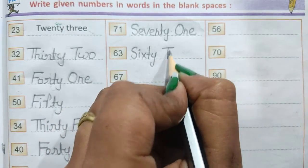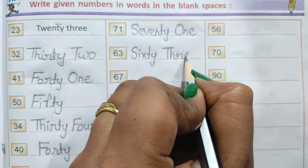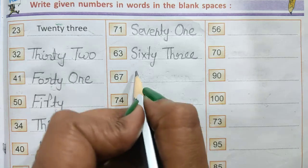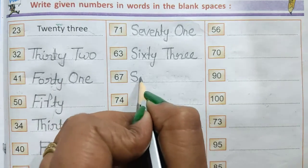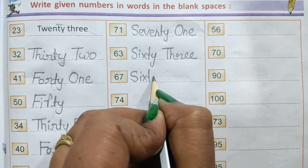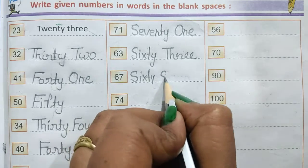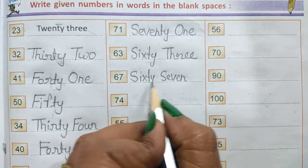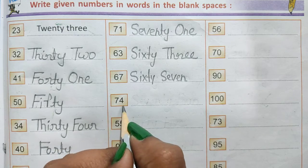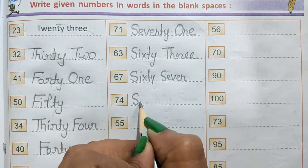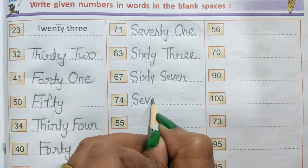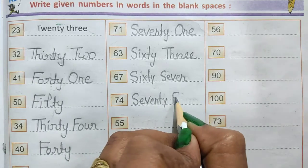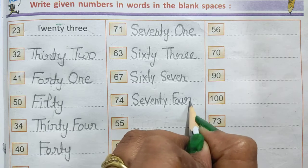60 = sixty. 63 = sixty-three. 67 = S-I-X-T-Y S-E-V-E-N, sixty-seven. 74 = S-E-V-E-N-T-Y F-O-U-R, seventy-four.